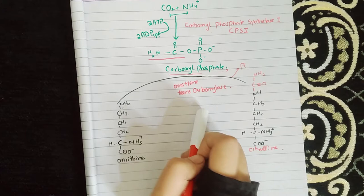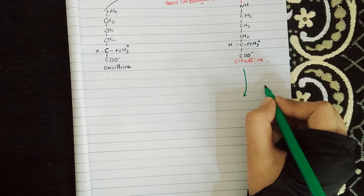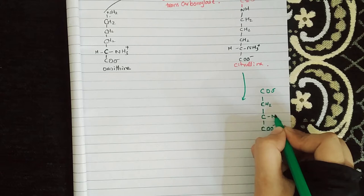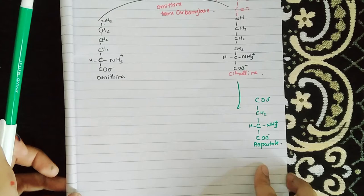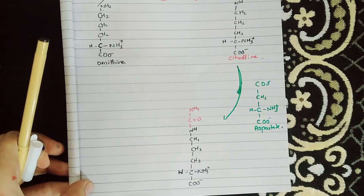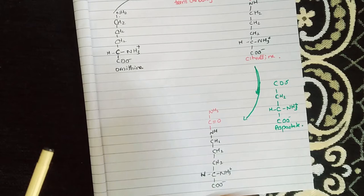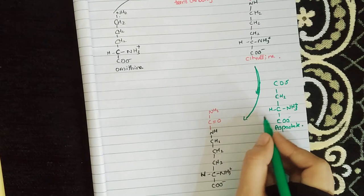Now we will attach aspartate to citrulline. Aspartate has four carbons. We will draw all the structure of citrulline and then attach this aspartate to it. When we attach aspartate to citrulline, the C double bond will be involved in the bond formation, and the NH2 group will carry a positive sign with a single bond.